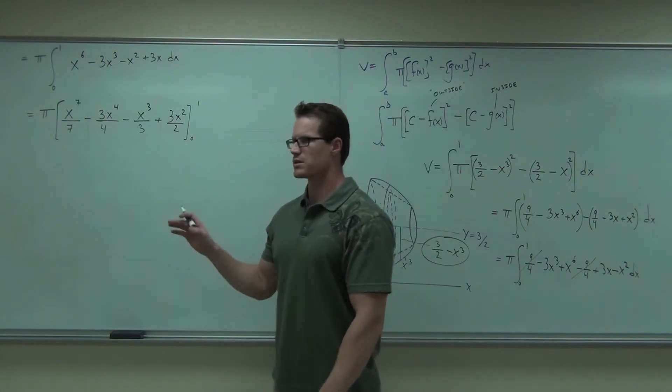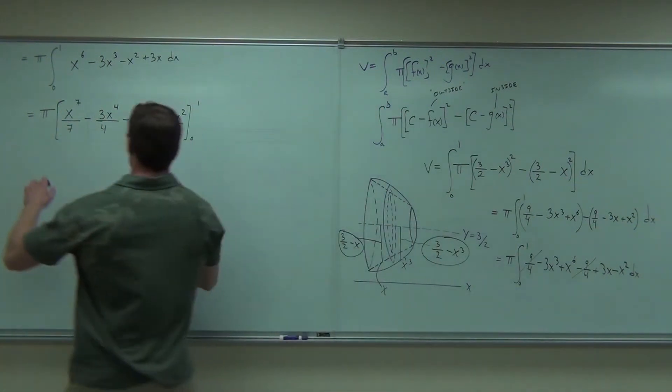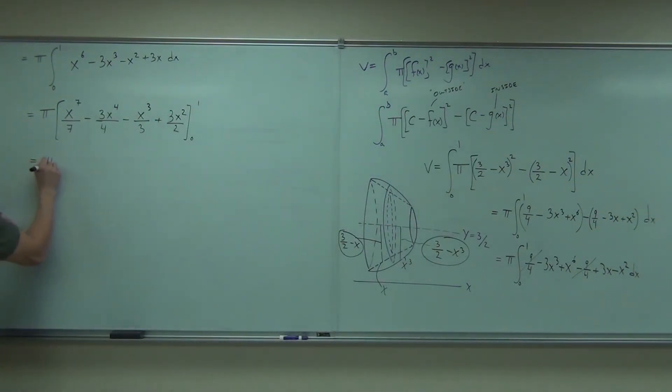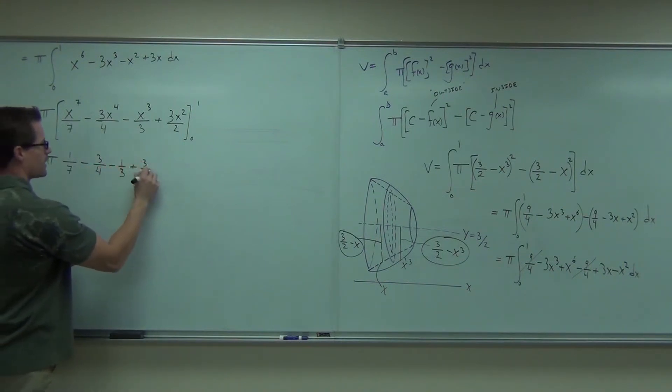Now we're going to plug in 1 first, we'll plug in 0 next. If I plug in the 1, if I evaluate, I'm going to get 1/7th. I love 1's too. Man, they're nice. 3/4ths, 1/3rd, and 3 halves.